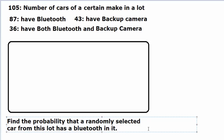We are going to use Venn diagrams to make probability calculations. So let's take this simple example: in a lot, there are 105 cars of a certain make.